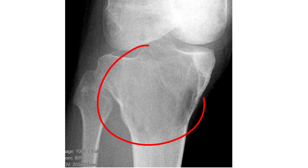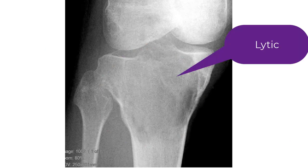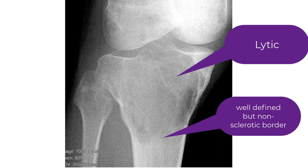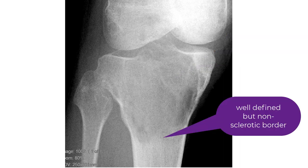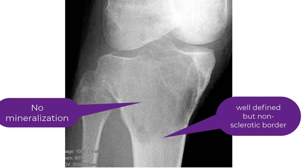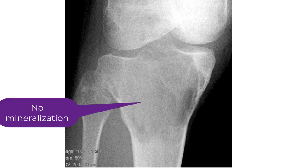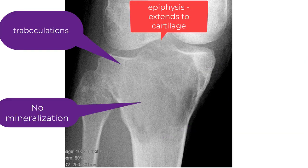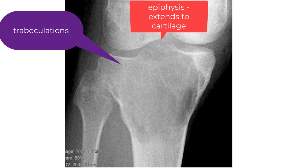Here's a classic giant cell tumor involving the proximal tibia. It's lytic — that is, bone is lost in the lesion. The borders are well defined but not sclerotic. There is no mineralization within the lesion, and there are trabeculae, which are nothing but bony ridges. When prominent, these make the lesion look like soap bubbles.